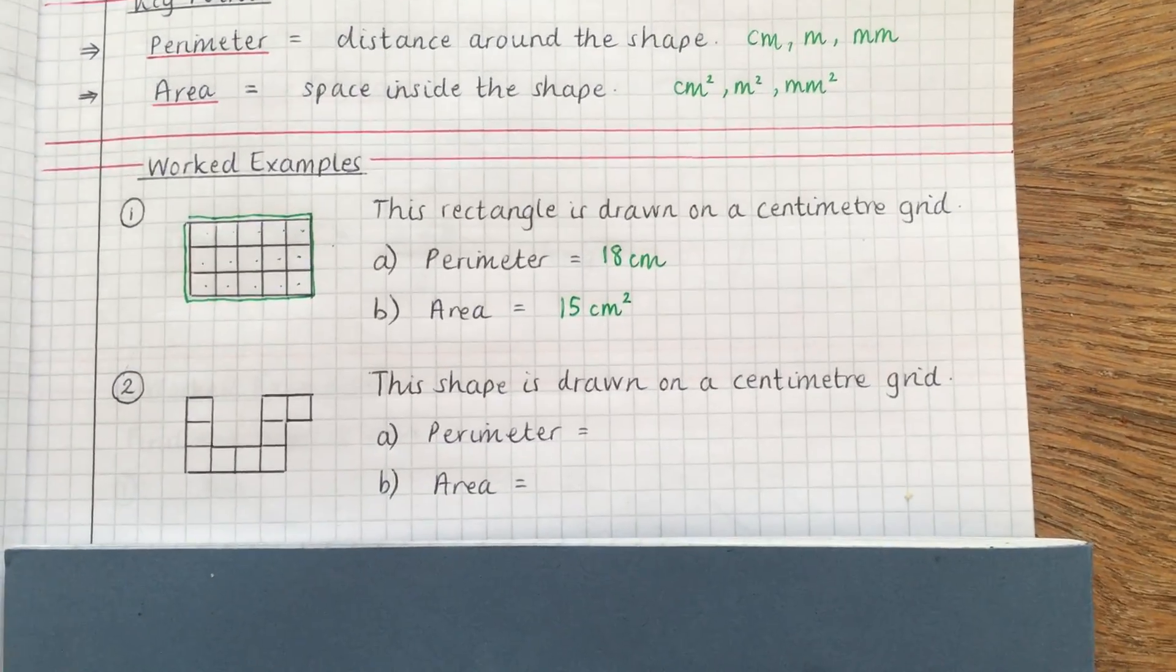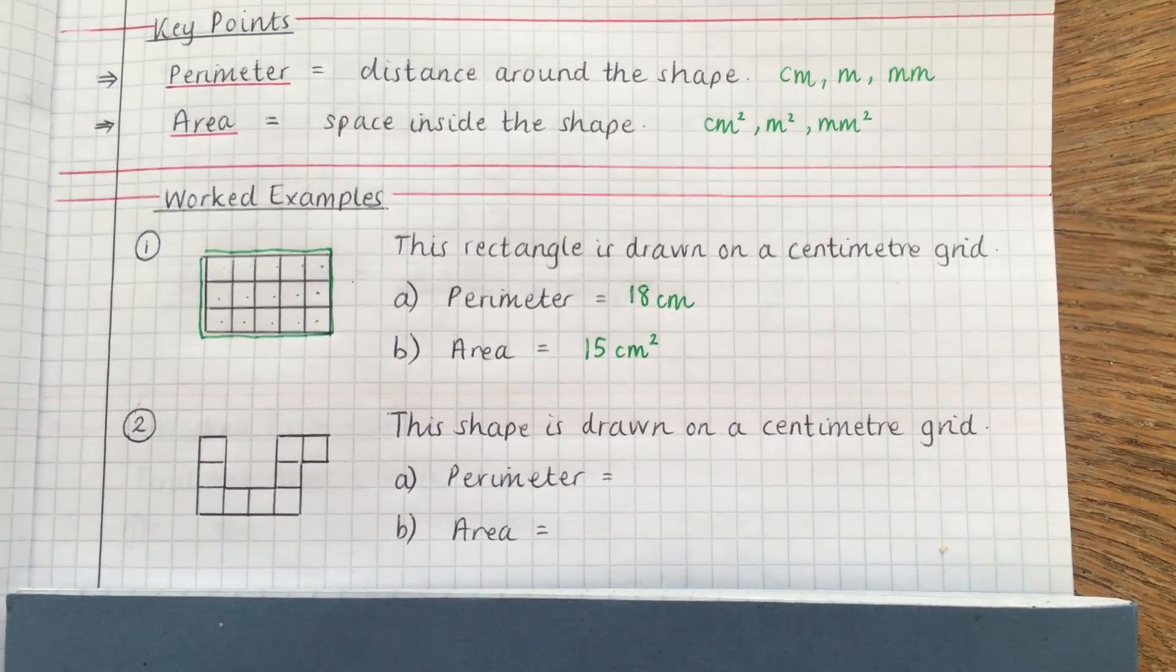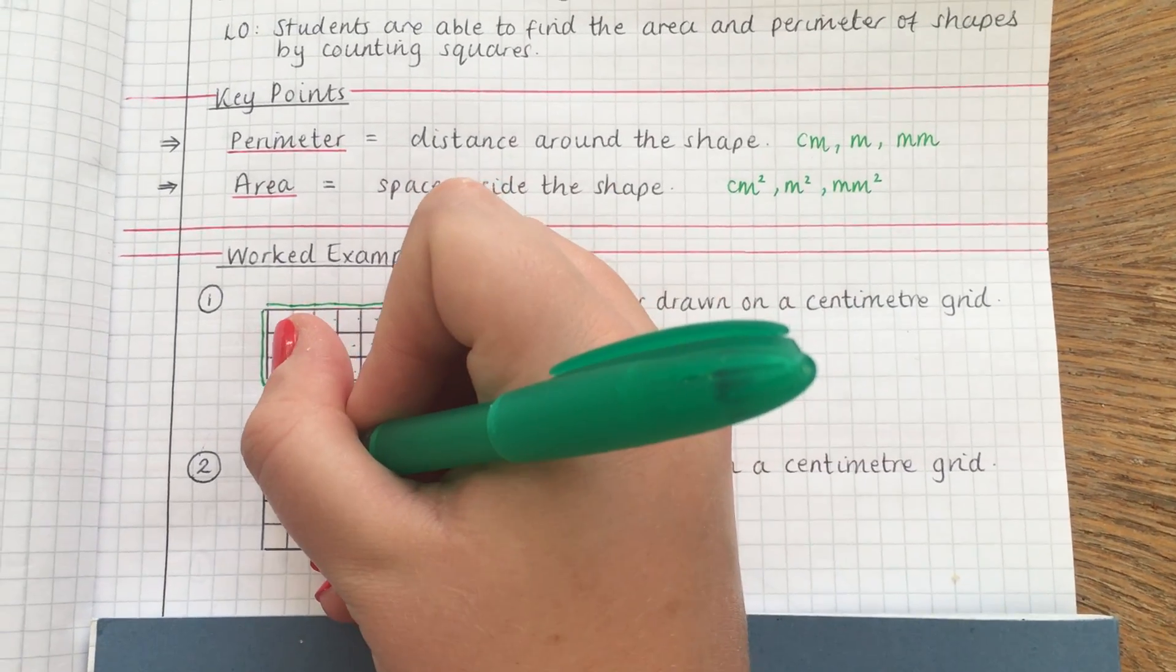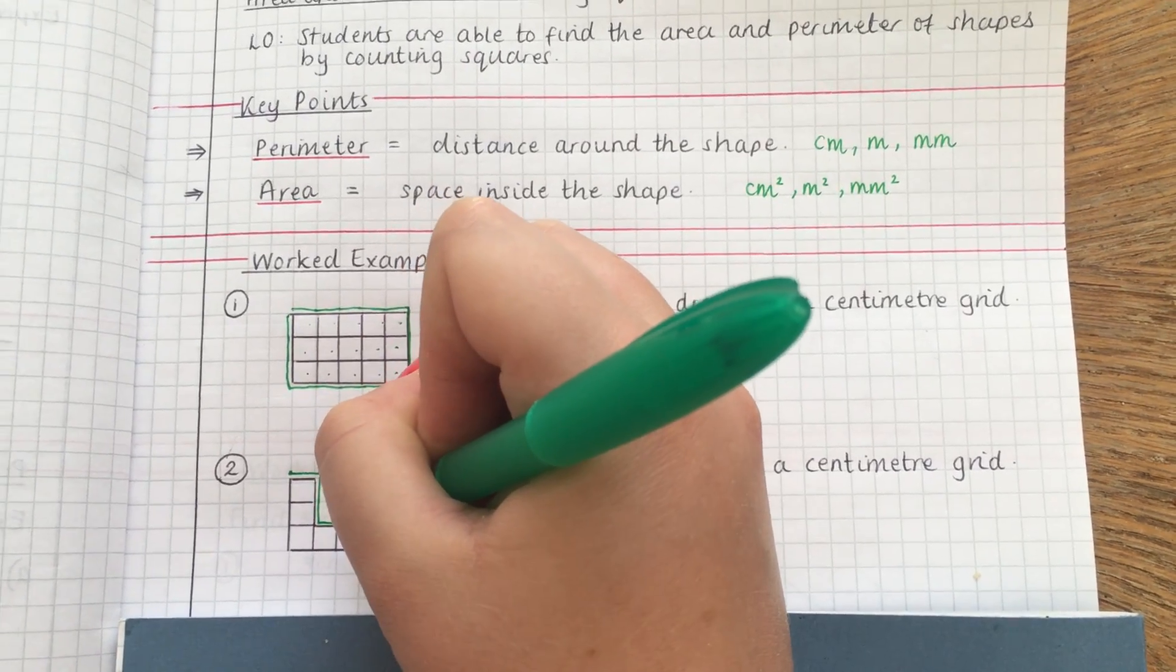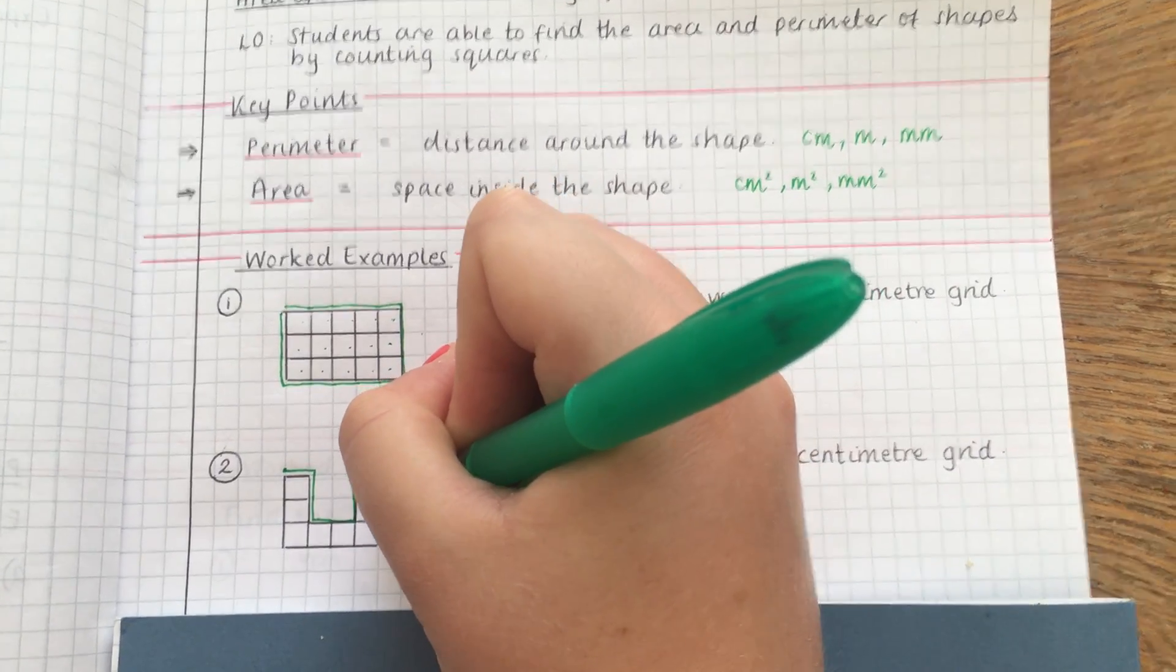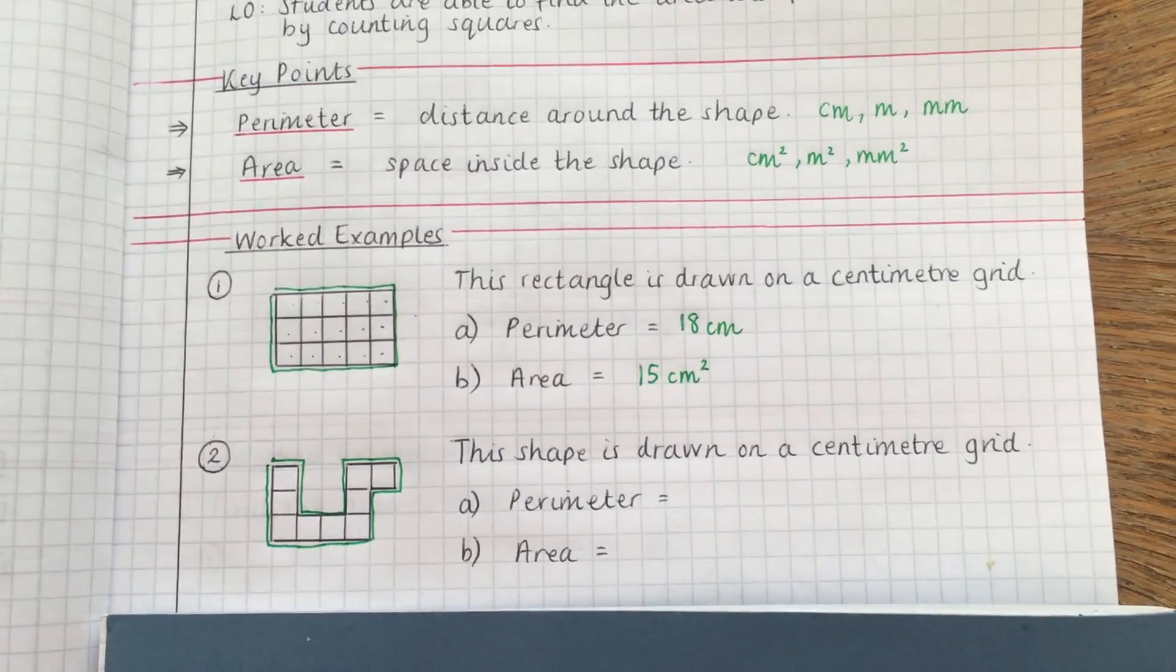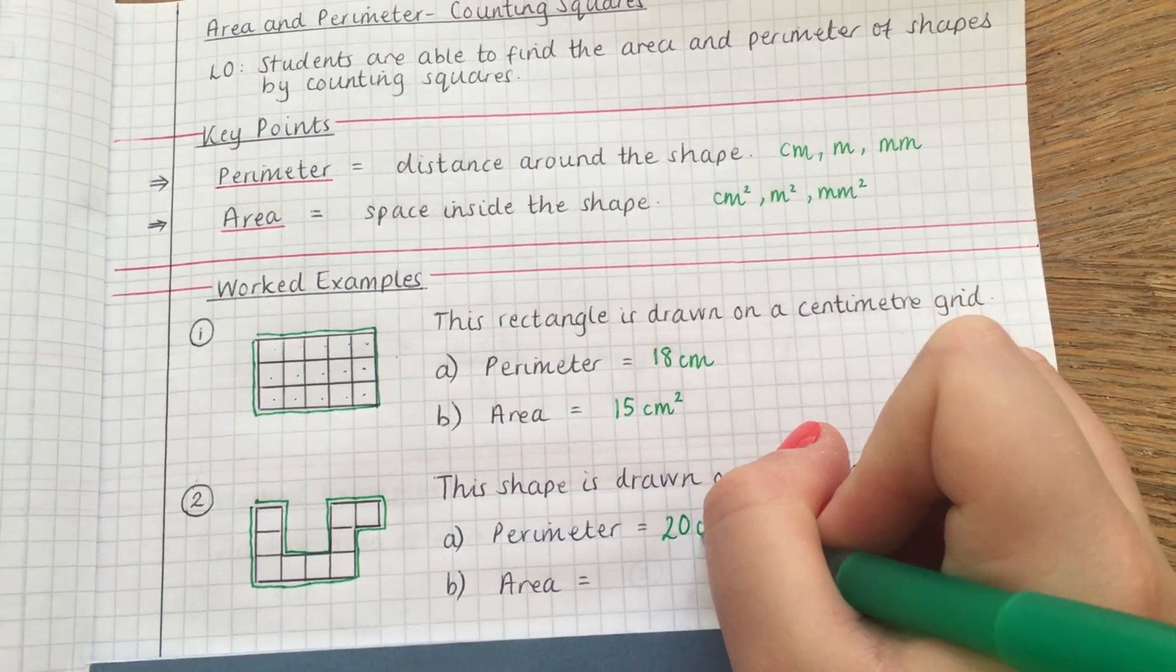Okay, next one is slightly trickier and this is where people usually make the mistakes for perimeter. So this is where it becomes really important that you do use your pen or highlighter to go around the edge of the shape. I'm going to start here and I'm going to go along one, down two, three, across four, five, up six, seven, eight, nine, ten, eleven, twelve, thirteen, fourteen, fifteen, sixteen, seventeen, eighteen, nineteen, twenty. So that's twenty altogether. So the perimeter is twenty centimeters.